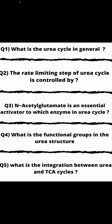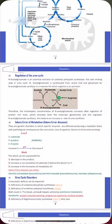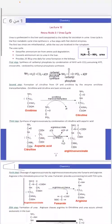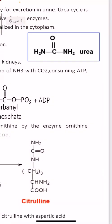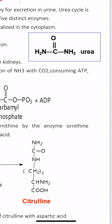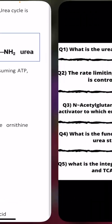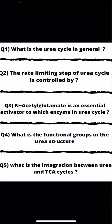Question 3: N-acetyl glutamate is an essential activator to which enzyme in the urea cycle? The answer is the first enzyme, carbamyl-phosphate synthase. Question 4: What are the functional groups in the urea structure? If we look at the structure of urea, it consists of two amino groups plus one carbonyl group. So the functional groups in the urea structure are one carbonyl group plus two amino groups.